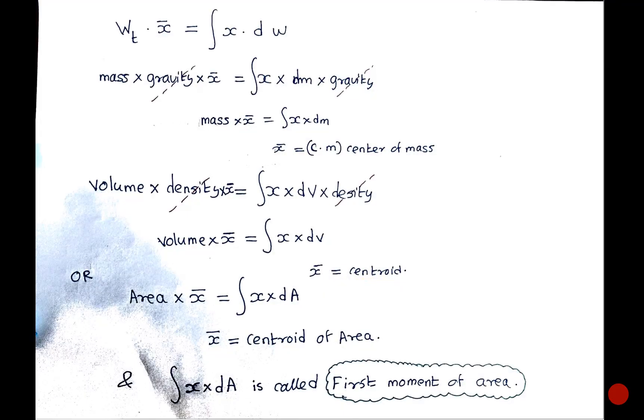Further, volume can also be written as area into x bar equals integration of x into da. This integration of x into da is a term called the first moment of area.